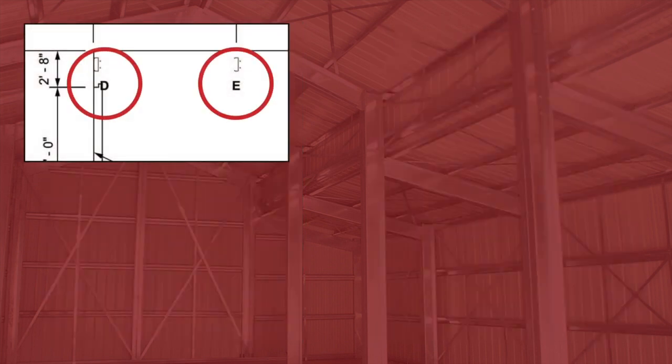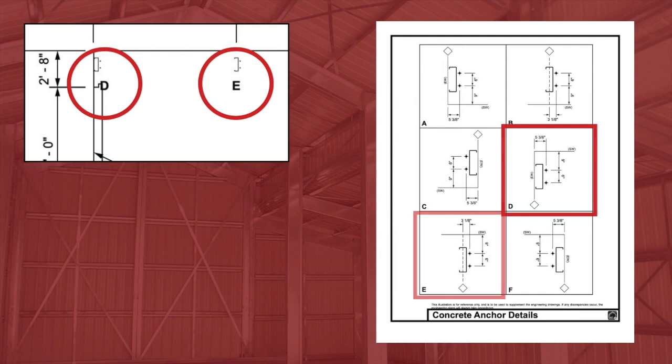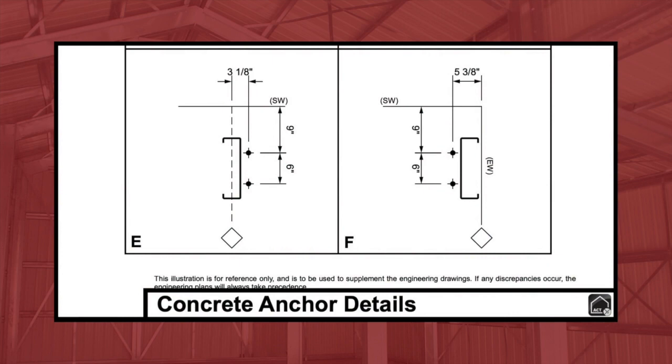You'll note that if we look at the columns, the drawings show us what direction all the columns are facing. Each column is marked with a letter, and if we go to the next page, we will see details for each column. These details include the exact placement of the column in relation to the end walls and side walls, as well as the precise measurements to help us place the columns and anchor bolts. Note that the detail for the interior portals includes a center line, and each center line has a diamond that corresponds to the diamond on the layout plan.